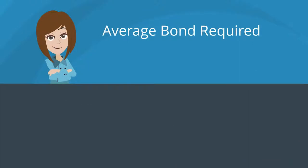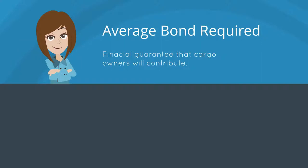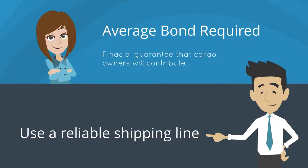To enforce this, all shippers are required to produce an average bond or financial guarantee before they can receive any of their unaffected cargo. This requires them to contribute a percentage of the value of the cargo lost — yet another reason it's important to use a reliable shipping line with clear rules about general average on its bill of lading.